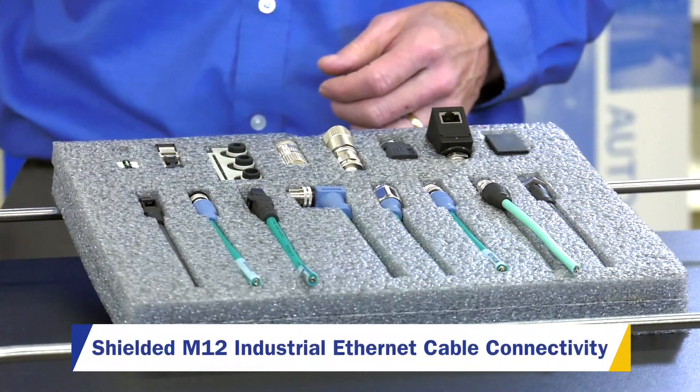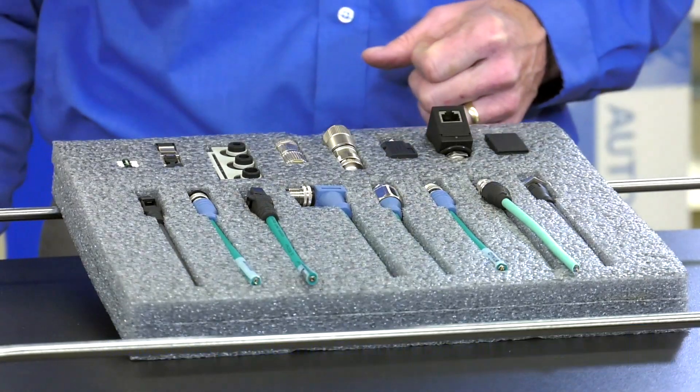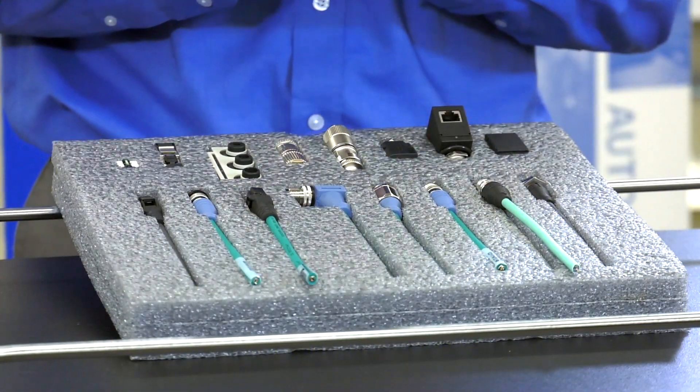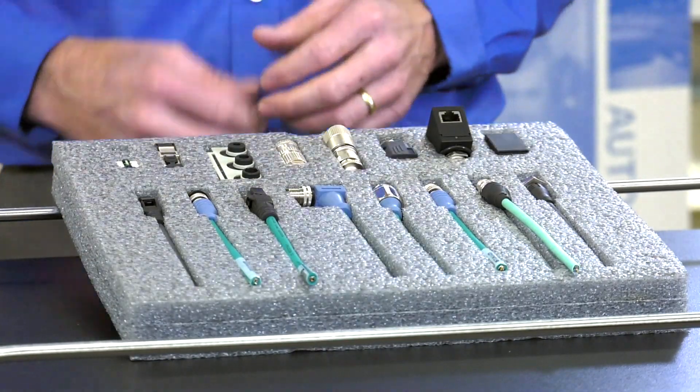What I'm here to discuss today is what we call an M12 overmolded cord set that allows you to create a connectivity for Ethernet out on the factory floor.